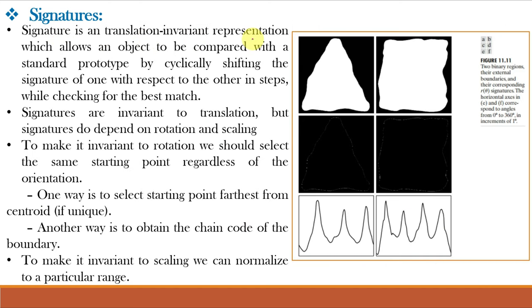Signature is a translation invariant representation which allows an object to be compared with a standard prototype by cyclically shifting the signature of one with respect to other in steps while checking for the best match. The signatures are invariant to translation but the signatures do depend on rotation and scaling. And to make it invariant to rotation, we should select the same starting point regardless of the orientation. So one way is to select the starting point farthest from the centroid if it is unique. And another way is to obtain the chain code of the boundary which we have already learnt. And to make it invariant to scaling, we can normalize it to a particular range.